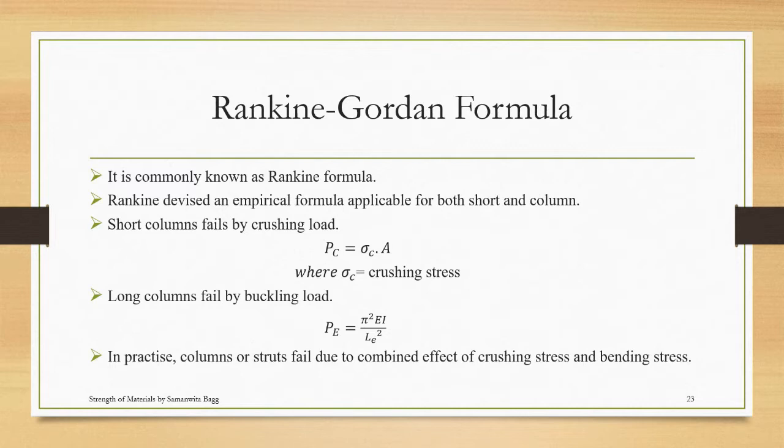So the short and medium columns were completely not considered. The Rankine-Gordon formula is commonly known as Rankine formula. Rankine devised an empirical formula applicable for both short and long columns. Short columns fail by crushing load. When we design for crushing load, we say it is sigma c, that is crushing stress, into the cross section area.